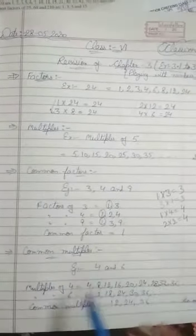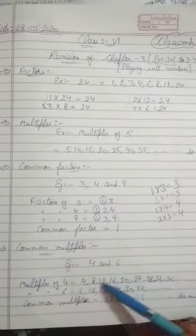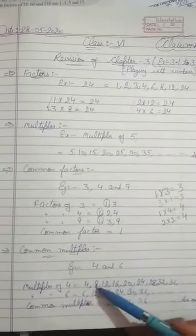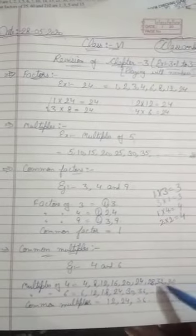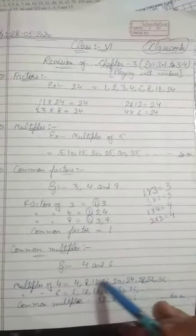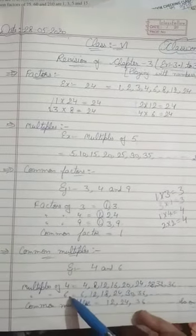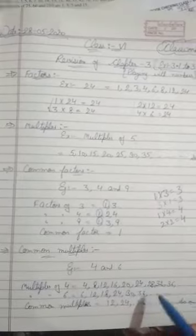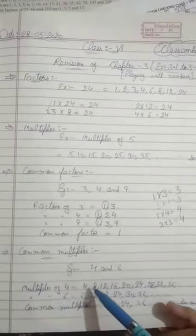Now next topic is common multiples. Same format. To find common multiples of 4 and 6, what should you do? Just write the multiples of 4 and multiples of 6. Multiples of 4: 4, 8, 12, 16, 20, 24, 28, 32, 36, and so on. Why are they multiples of 4? Because they all are divisible by 4. Same as 6: 6, 12, 18, 24, 30, 36, and so on.